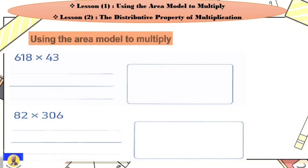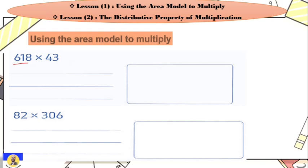First method: using the area model to multiply. What is the area model? How can we do it? We can write a rectangle on the numbers. If I have a number like six hundred eighteen and forty-three, the first thing to do is write the number — six hundred eighteen and forty-three — and draw the rectangle.